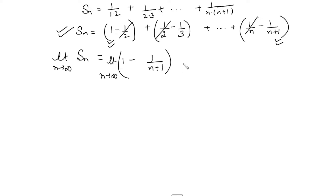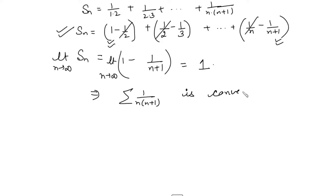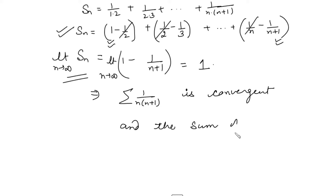When you find the limit of Sn, it comes out to 1 because the last term goes to 0 as n → ∞. This implies that the series ∑ 1/[n(n+1)] is convergent because the sequence of partial sums is convergent and approaches 1. Therefore the series is convergent and its sum is 1.